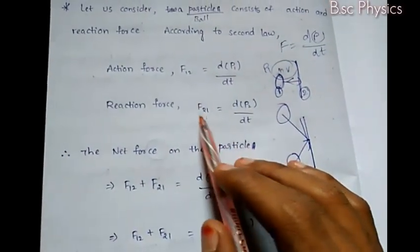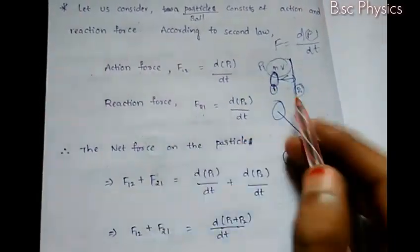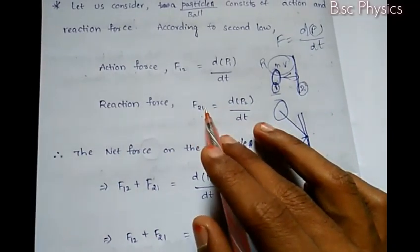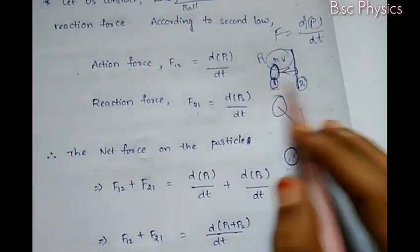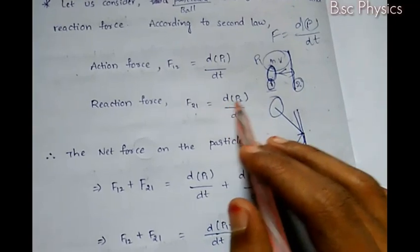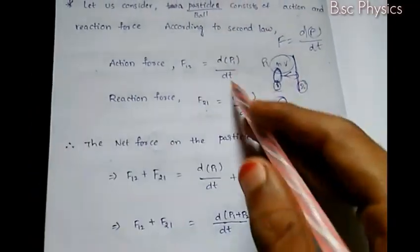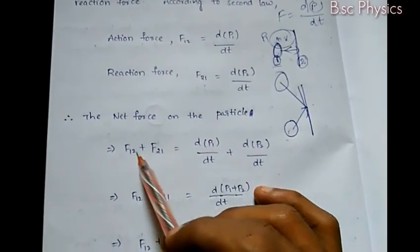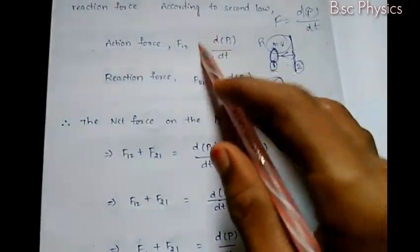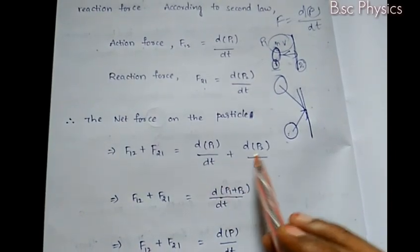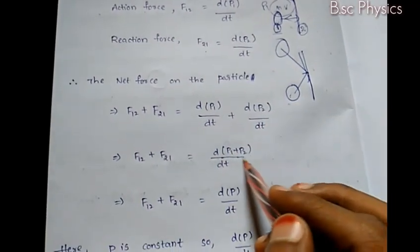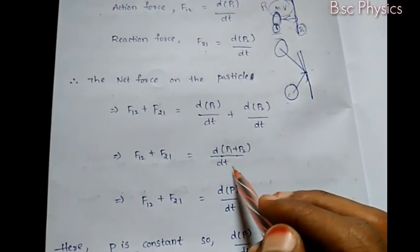The reaction force F21 acts in the opposite direction. So F21 equals dP2/dt. The net force on the system is F12 plus F21, which equals d(P1 + P2)/dt.